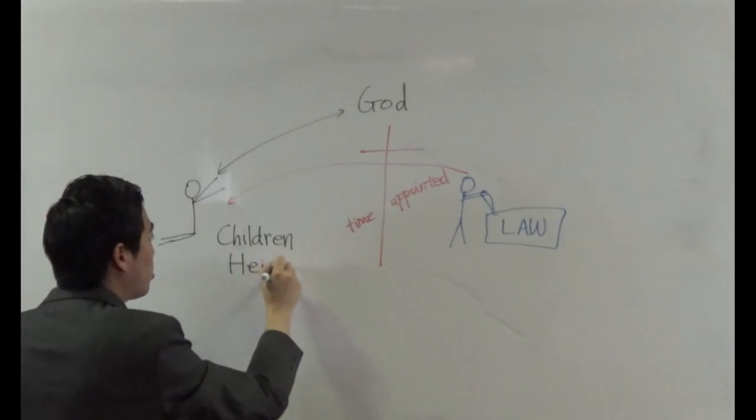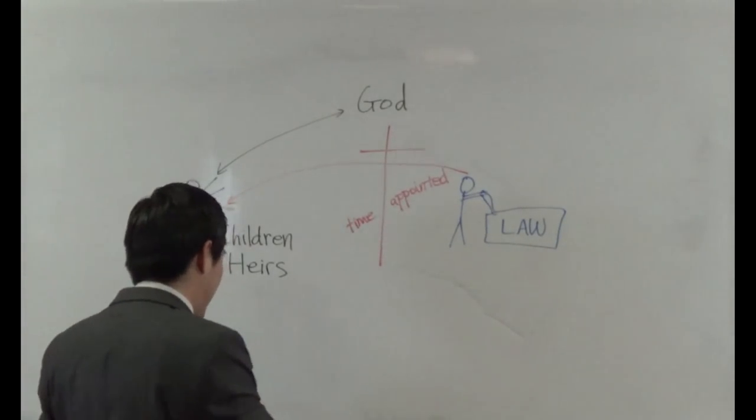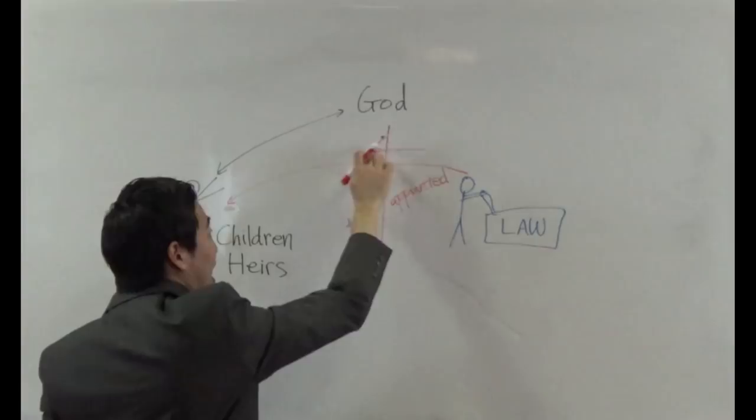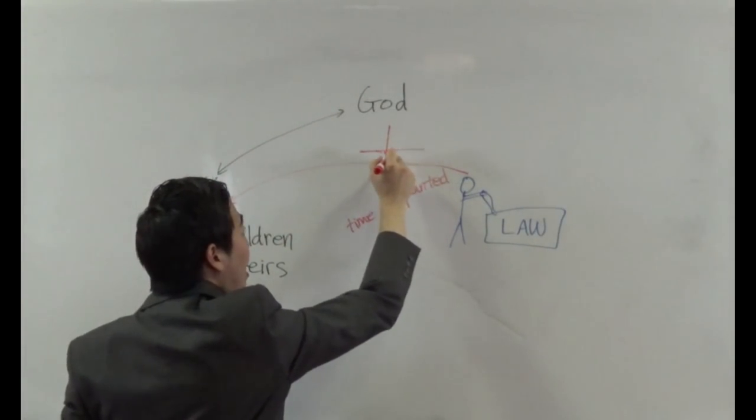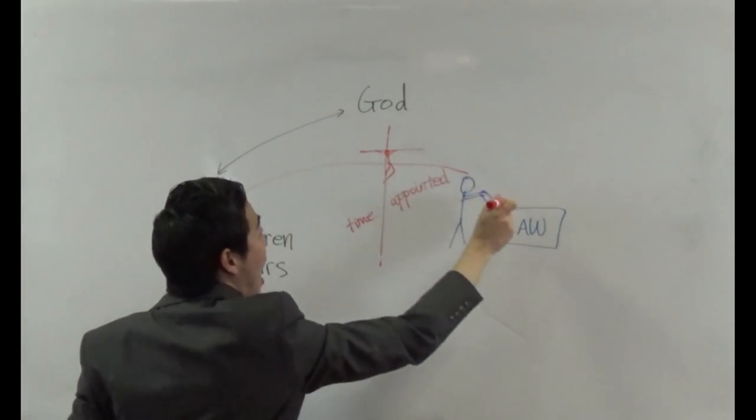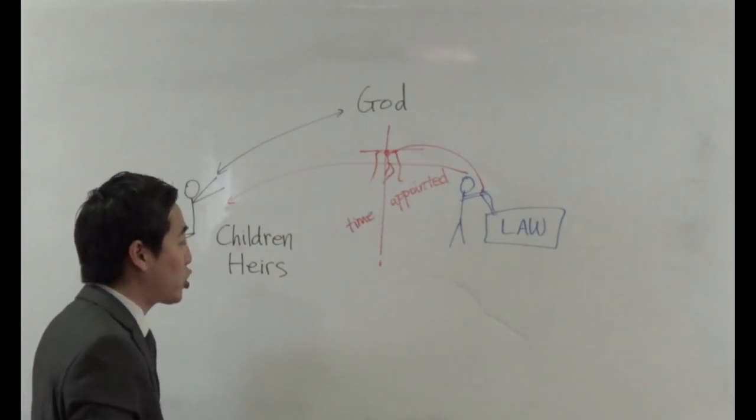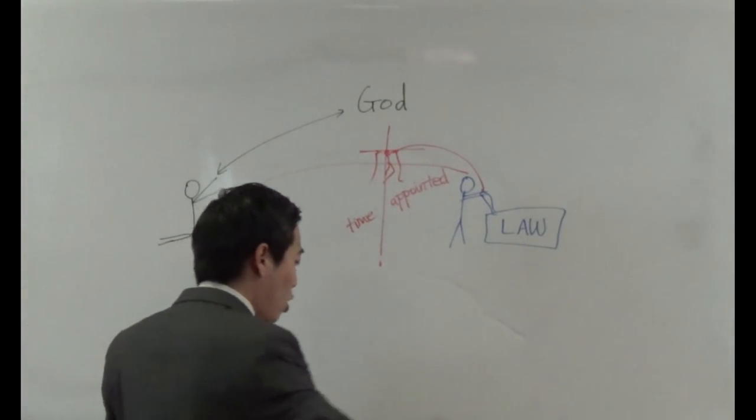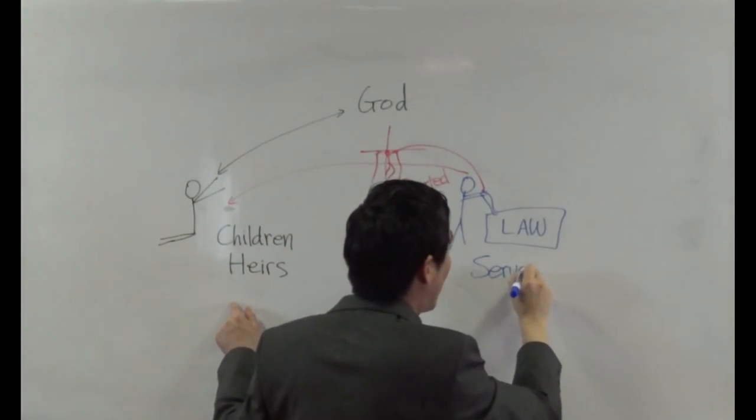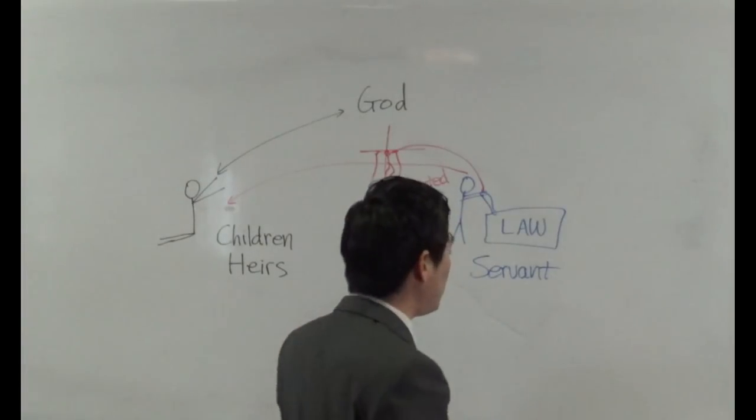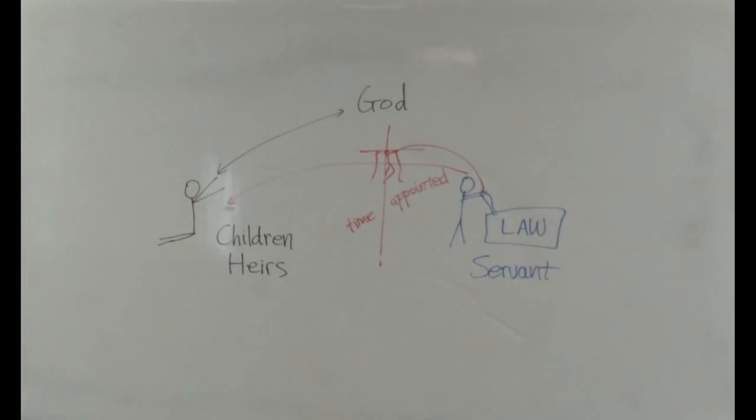So children heirs - you finally get the inheritance. How you crossed over this time appointed was the crucial key where you can become this. It was the crucial key where this man had to die in your place and take the chains off of you and put it on him. So he became a servant in your place while you became the children heir after that. So we understand that so far from Paul's illustration. So now let's continue on at verse 6.